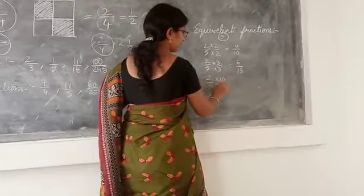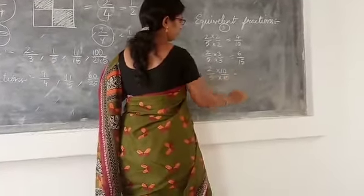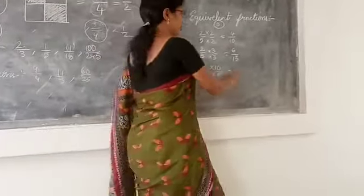And also we take another number. I take here 10. 2 times 10 is 20 and 5 times 10 is 50.